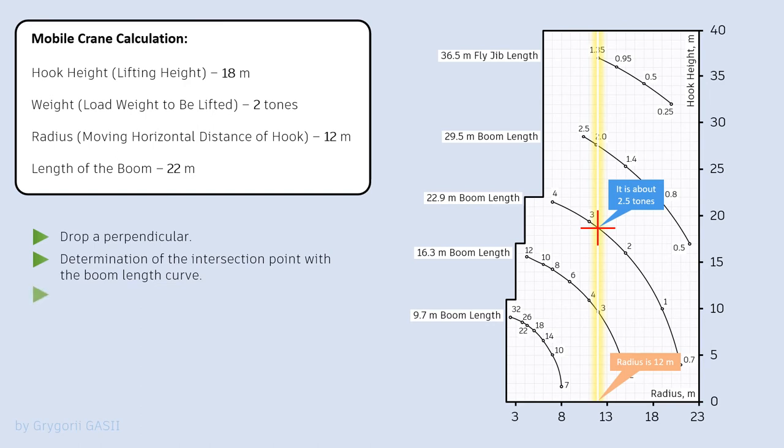Let's check whether the received load capacity satisfies the required one, which was determined by calculation. Following the chart, the mobile crane is capable of lifting a load of just over 2.5 tons, which is more than determined by the calculation. Thus, the crane under consideration already satisfies three design parameters.